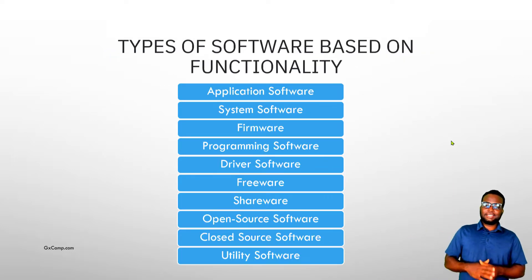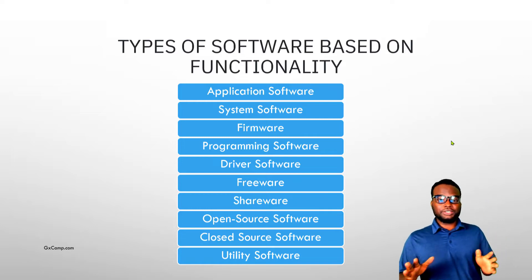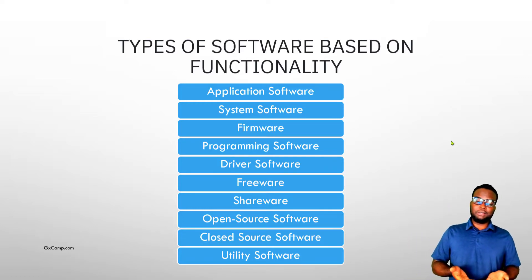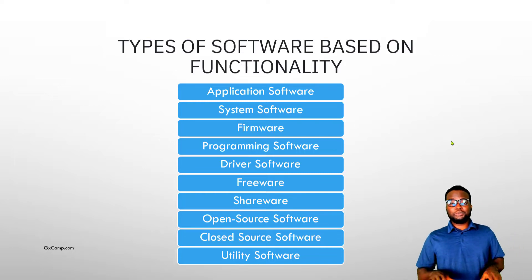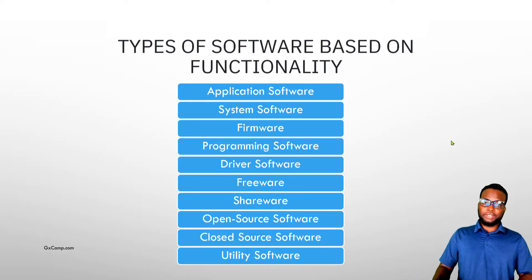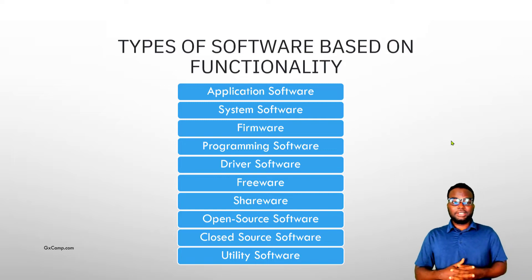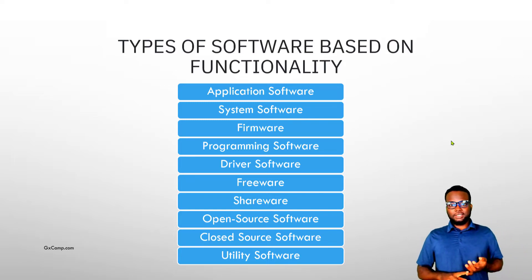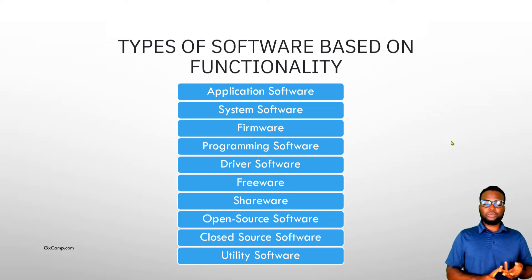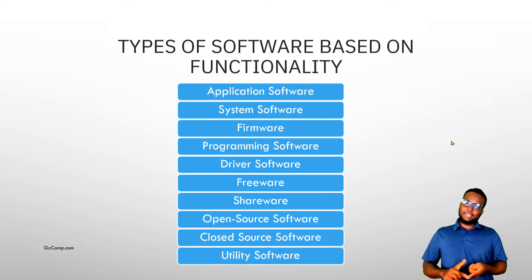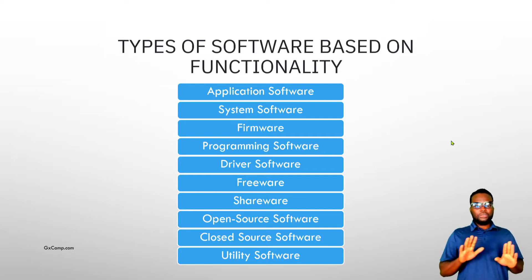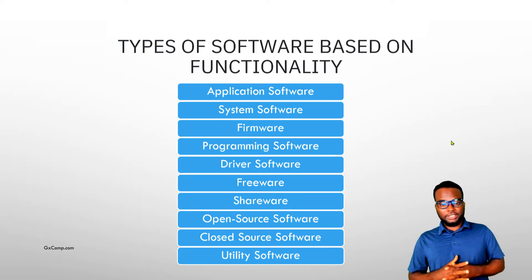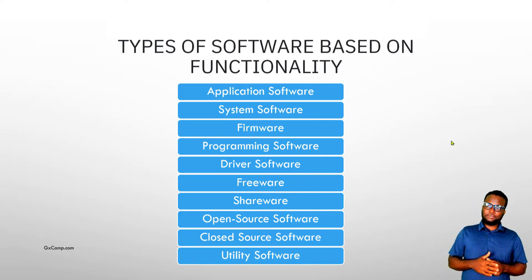If you want to use this type of software based on functionality, you can use it as application software. Application software, like the mobile calculator and music player, is application software. You can also use the system software — the computer is application software.